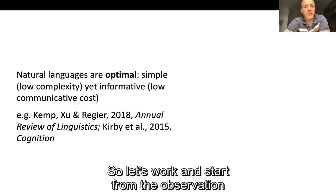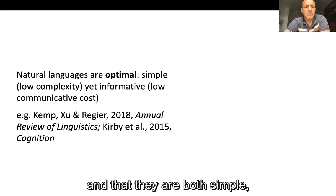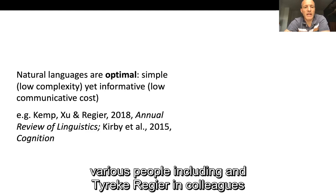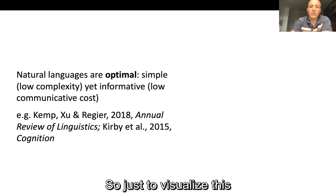This work starts from the observation that natural languages seem to be optimal in that they are both simple — have low complexity — and yet informative, with low communicative cost. This observation or conjecture has been made by various people including Terry Regier and colleagues, and we've also suggested something similar ourselves.